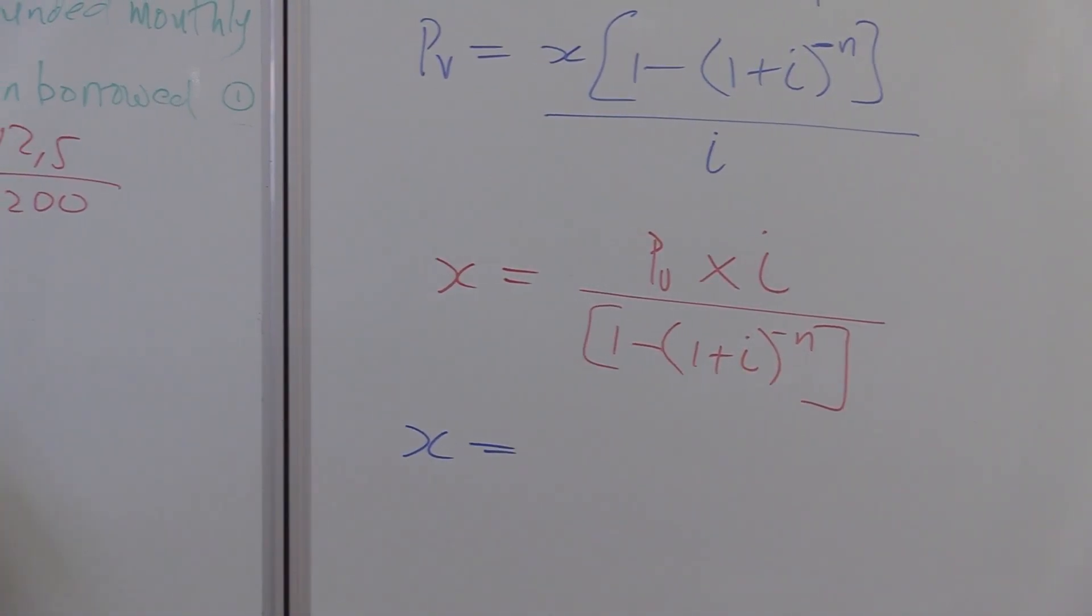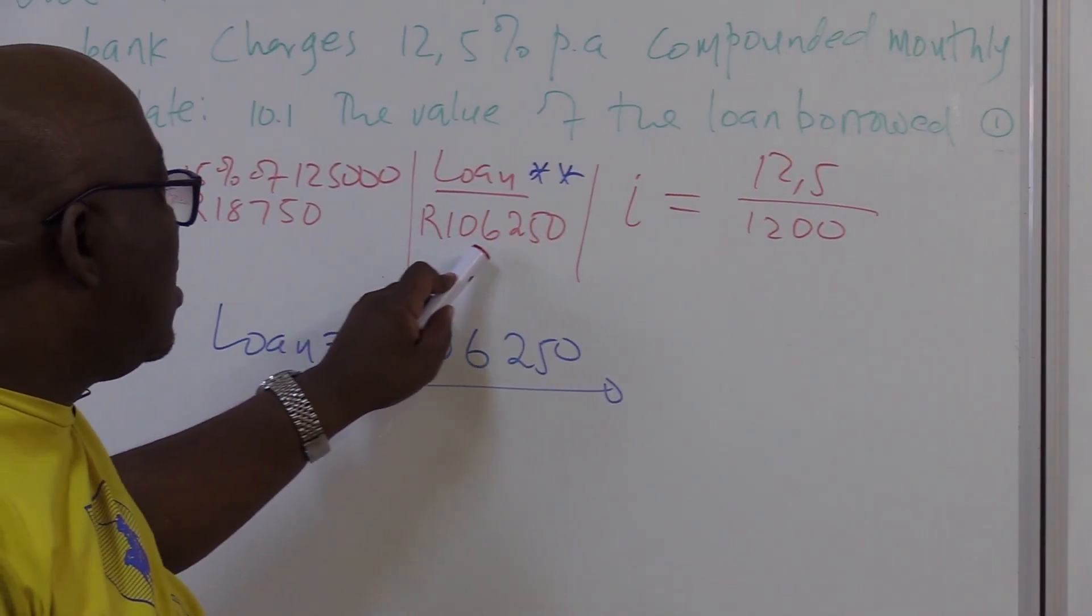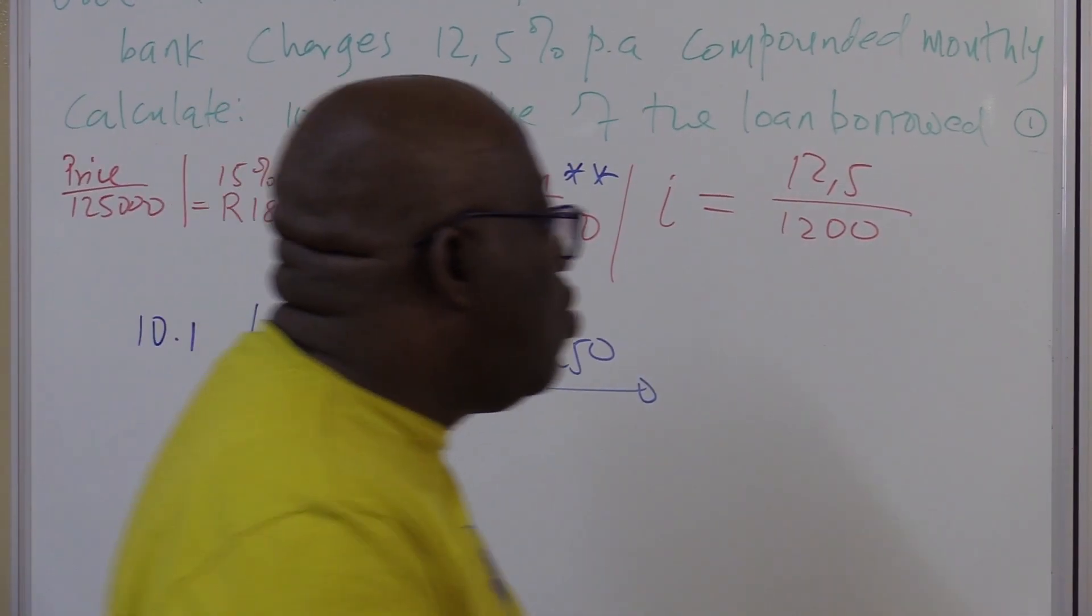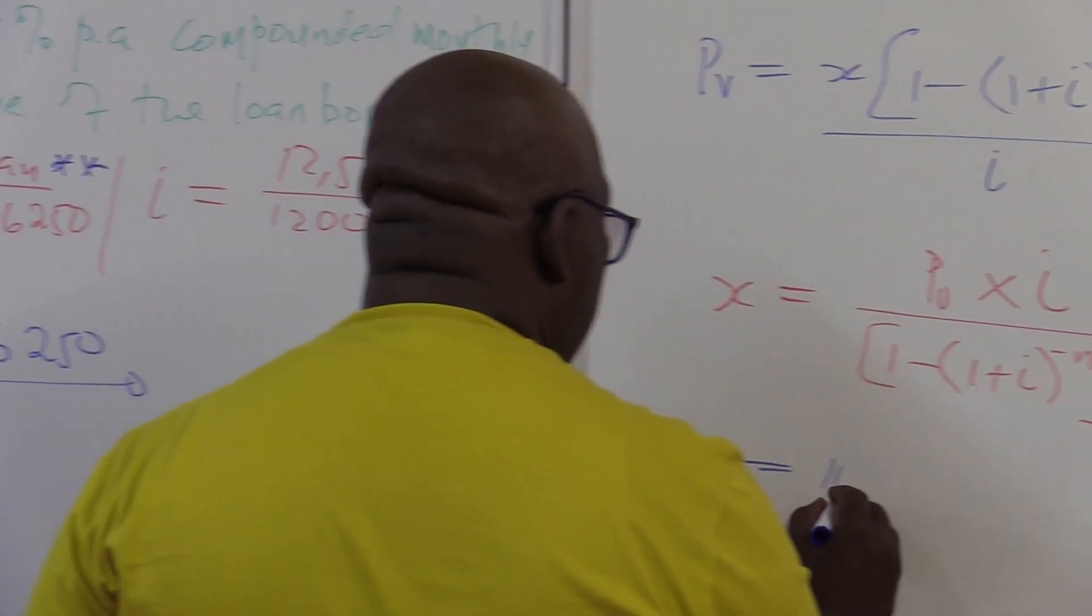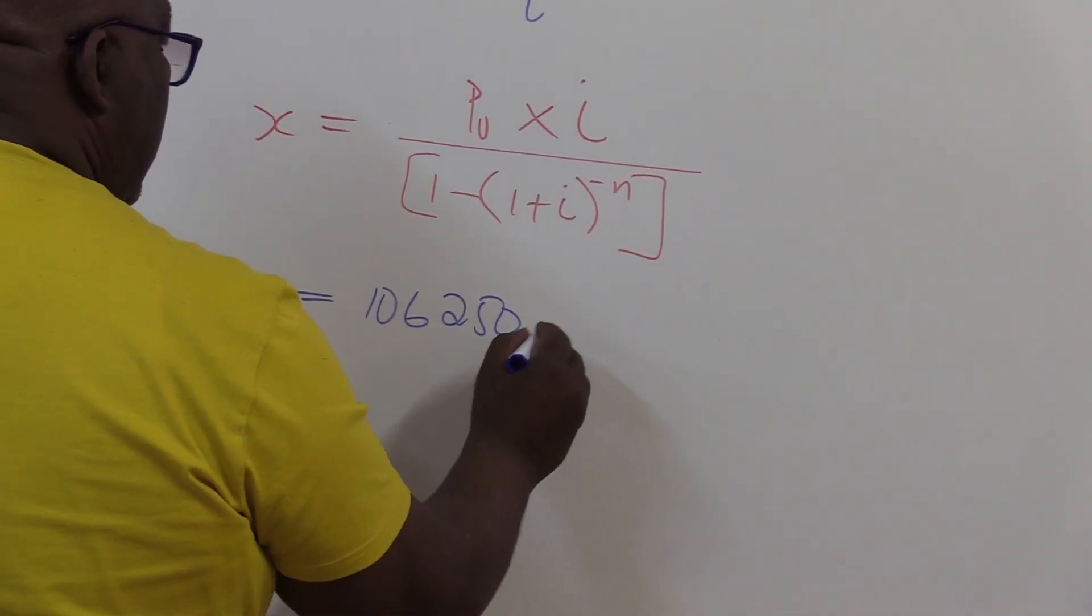So, the monthly installments in this particular case would be equals to how much is the loan? Remember, the loan is not 125. We've already done it here. It is 106,250. And we've labeled it in question one. So, the loan is, my PV, it's 106,250.